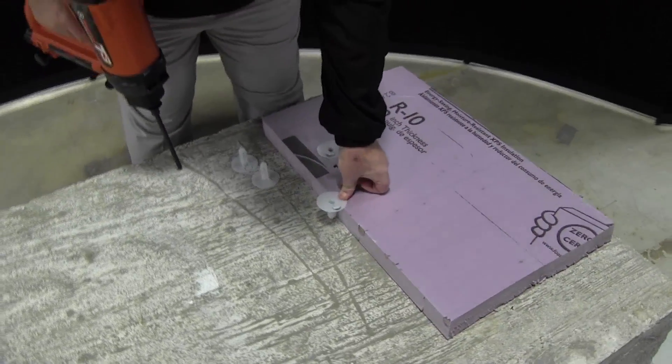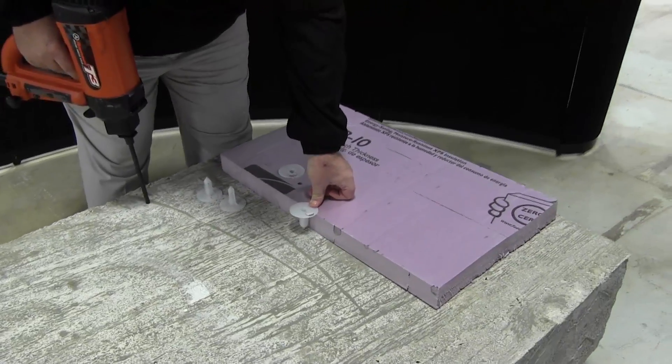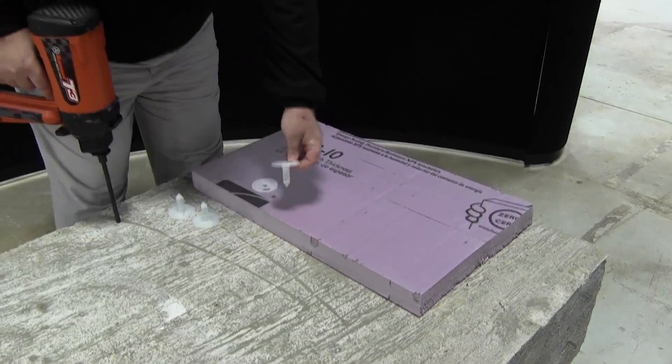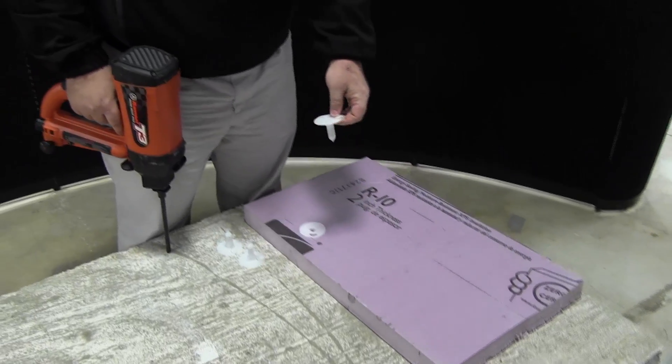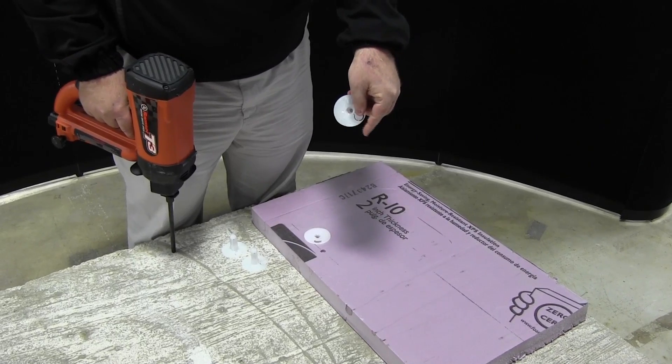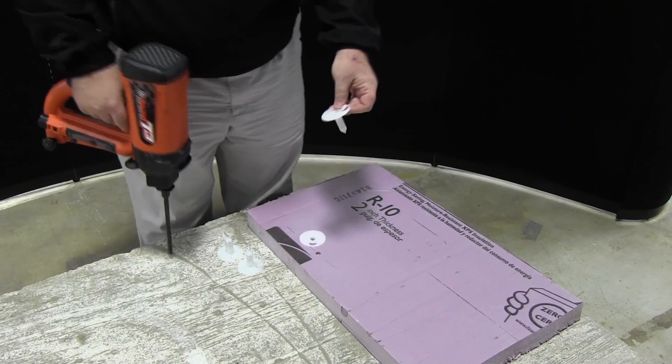The fastener is going to go into the insulation, just like so. It's not going to crimp it, so you don't lose any of your R value on the insulation. The nosepiece will rest right up against the concrete. The pin inside will be shot into the substrate.